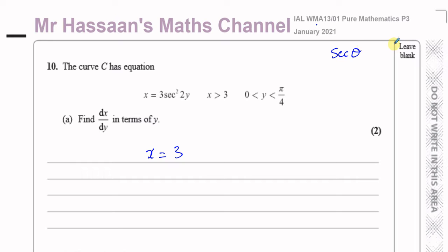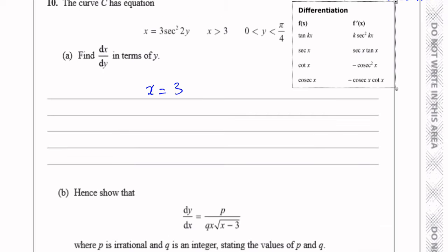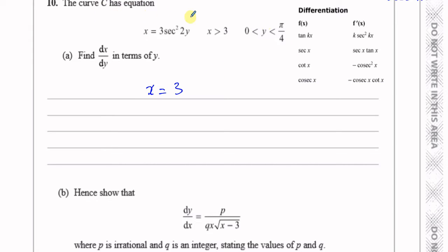The secant of an angle — we can see its differential from the formula book. It will tell us that the differential of sec(x) is sec(θ) tan(θ). That's one of the results in our formula book. Just to show you here, we have an extract from the formula book relevant to what we're talking about. It says differentiation: f(x), f'(x). We can see that the differential of sec(x) is sec(x) tan(x).